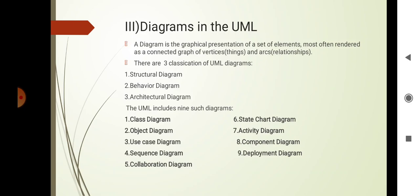A structural diagram is a type of diagram that depicts the elements of a specification that are irrespective of time, and this diagram shows the things in a system being modeled. A behavioral diagram is a type of diagram that depicts behavioral features of a system or a business process. It shows what should happen in the system and also describes how the objects interact with each other to create a functioning system.